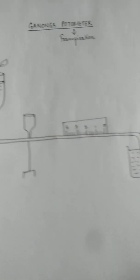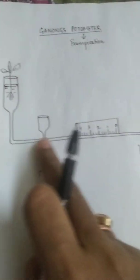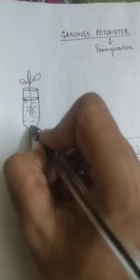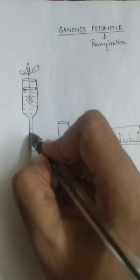Now why have I colored it? That also I will let you know. And the remaining the entire setup of this potometer that is filled with normal water. Normal water means uncolored water.